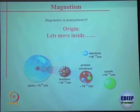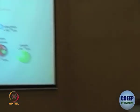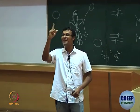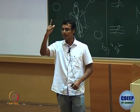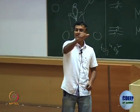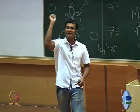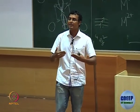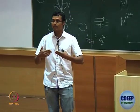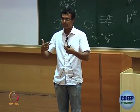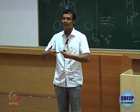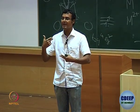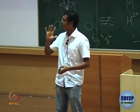It rotates around its own axis — that is the spin component. It rotates in an orbital — that is the orbital component. These are two vectors; you do vector addition and get the net magnetic moment.